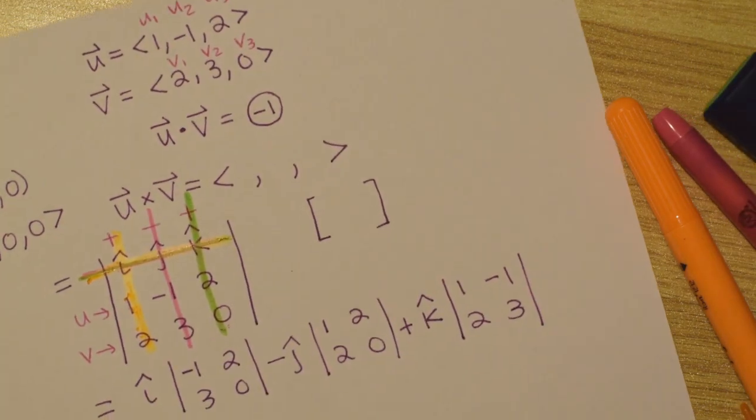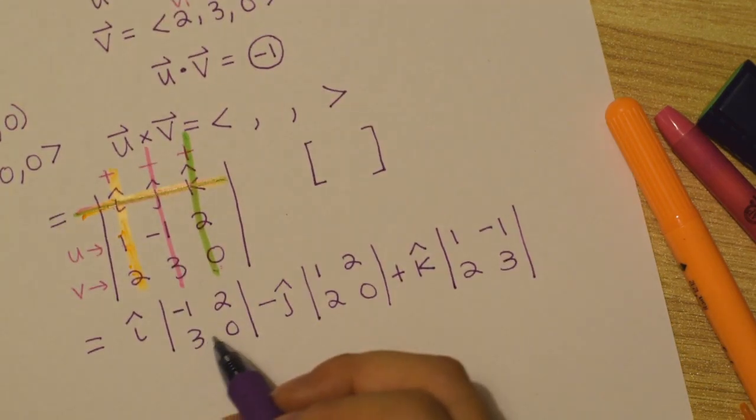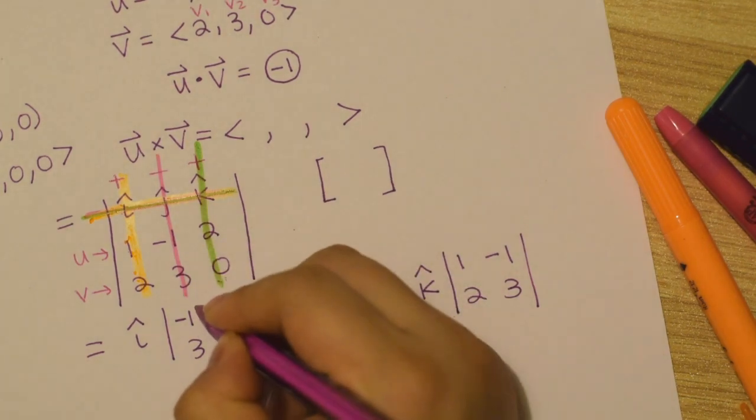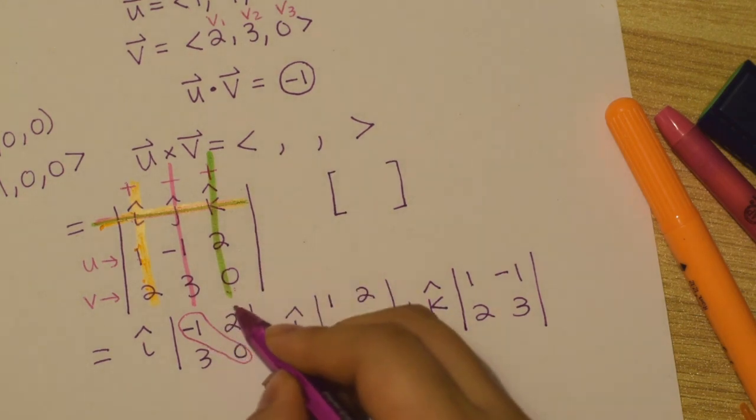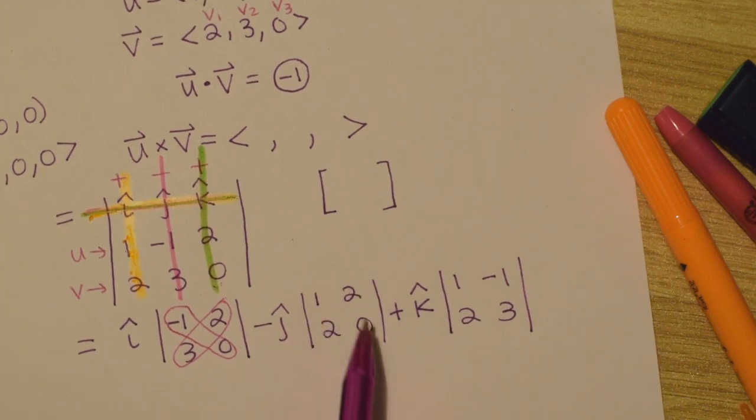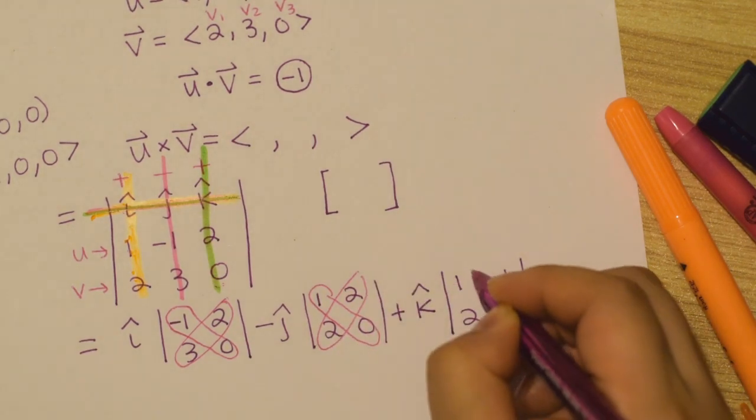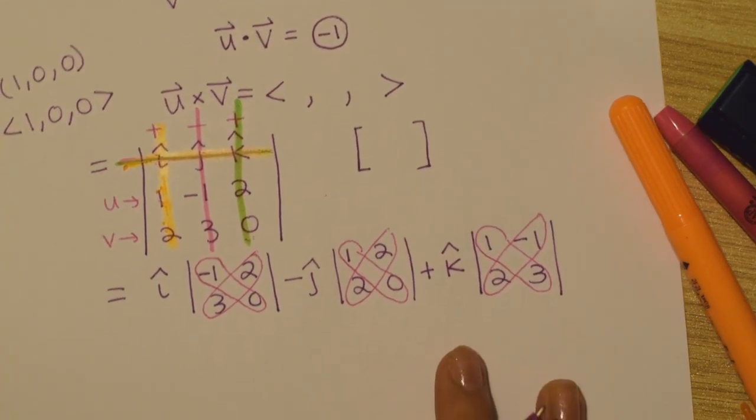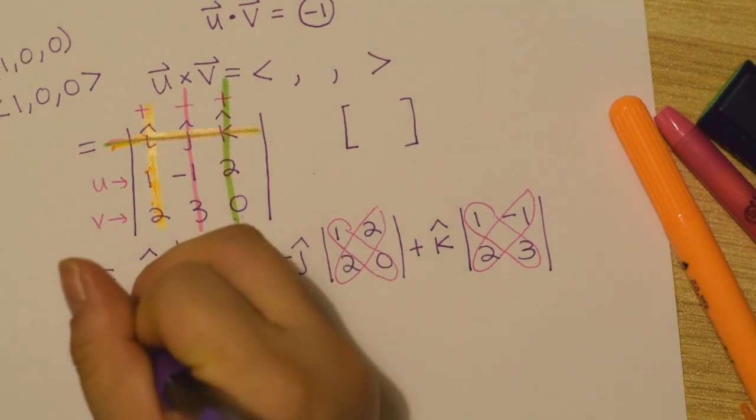And so now we basically broke down the determinant of 3 by 3 into a bunch of 2 by 2s, which is actually easier to deal with. We basically just multiply the elements in this diagonal. So this way, this times this, minus this diagonal. So if it were a, b, c, d, it's a, d, minus b, c. So this minus this. This minus this. And following the order of operations, you always multiply first and then subtract or add or whatever else. So we'll just do that.